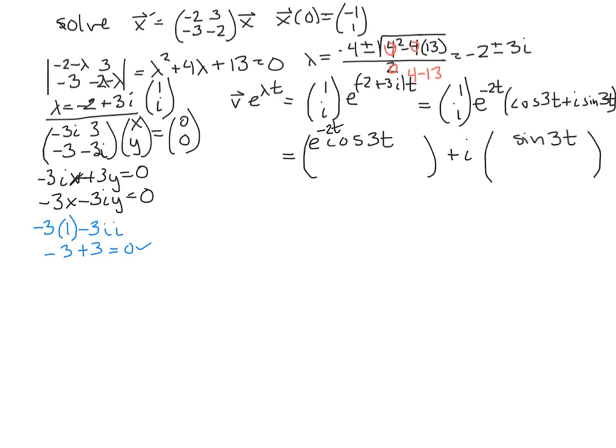Alright, so I've got that i times cosine. Now that is imaginary. So it goes over here. Then I've got i times i, which is -1. And -1 is real. So that's going to go over here in the real part. So i times i, -1. So that's going to give me -e^(-2t)sin(3t).